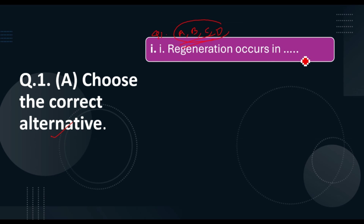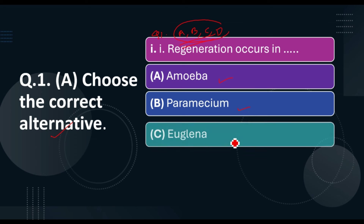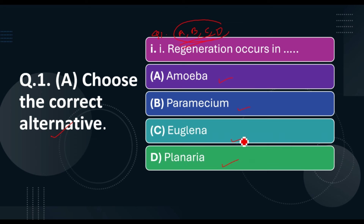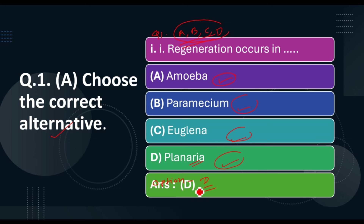Question one: Regeneration occurs in — options are amoeba, paramecium, euglena, or planaria. Among these animals, regeneration is a type of asexual reproduction. The correct answer is option D, planaria. When you write the answer, you have to write only 'option D — planaria is the animal that can reproduce by regeneration.' Only this much is required.